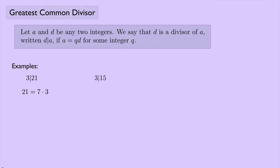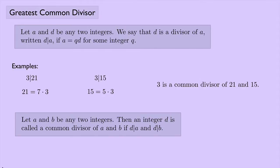And we know that 3 divides 15 because 15 equals 5 times 3. So we see that 3 is a common divisor of both 21 and 15. So we can say if we have any two integers A and B, then an integer D is called a common divisor of A and B if D divides A and D divides B.